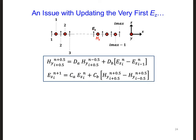No, we can't. The E_z update equation requires knowledge of the two neighboring H_y components. But there is no H_y to the left of the very first E_z.